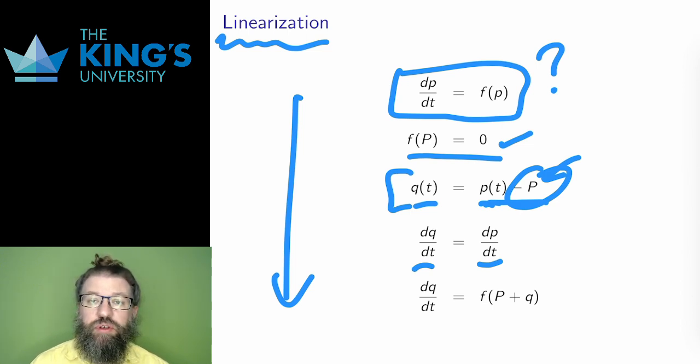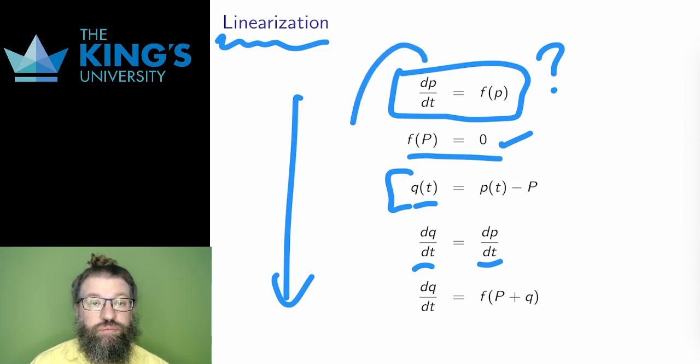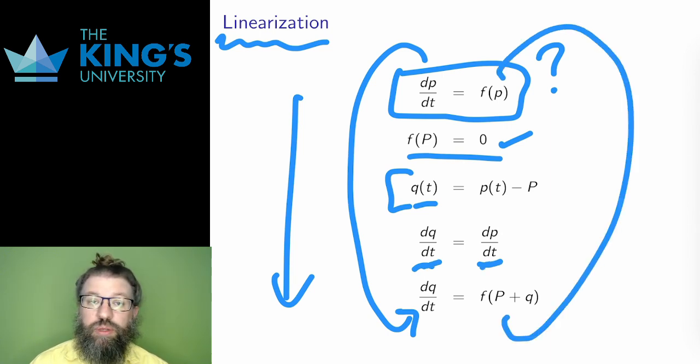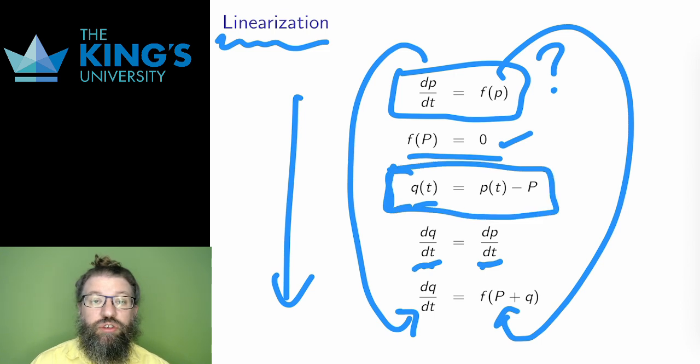This means I can change the DE from asking about p to asking about q. This is a kind of substitution, an integration technique that also works well for solving DEs. You'll see more of this later in the first-order section. So, I will replace the derivative of p with derivative q since they are equal. And then I will replace p with q plus capital P, which is just the definition of q if I isolate it and solve for p. Well, then I have a new differential equation in the new function q of t.